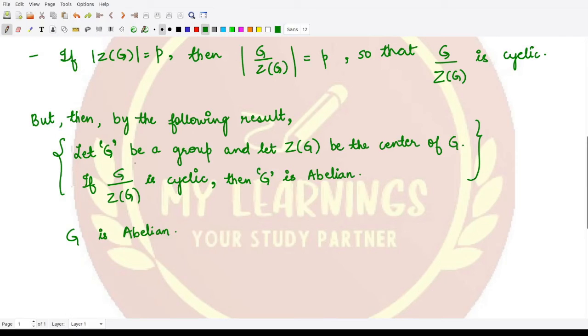This result tells us that if G is some group and Z(G) is the center of this group, and moreover if this quotient group is cyclic, then the group G is abelian. So using this we have our result.